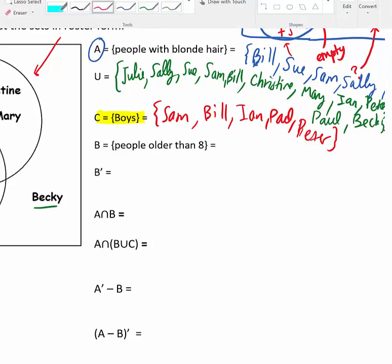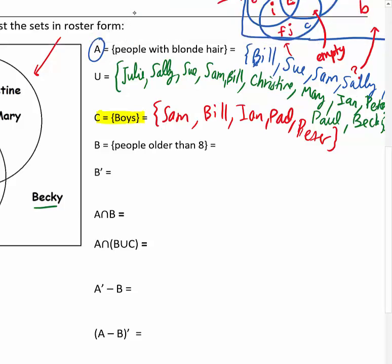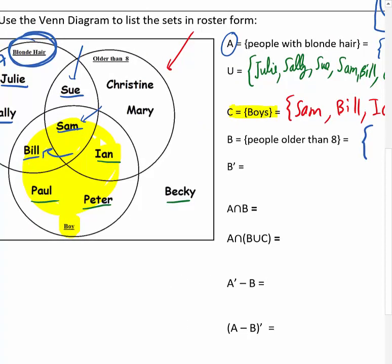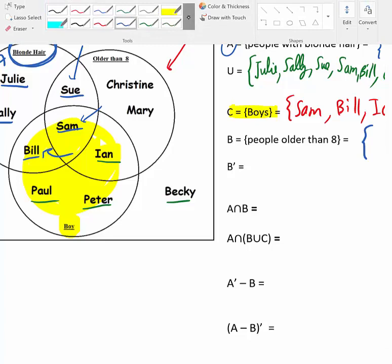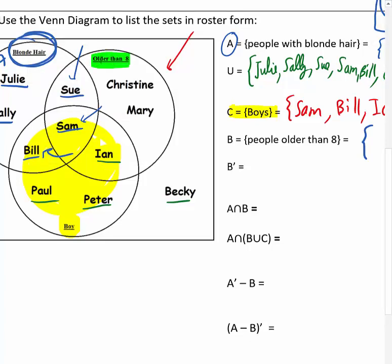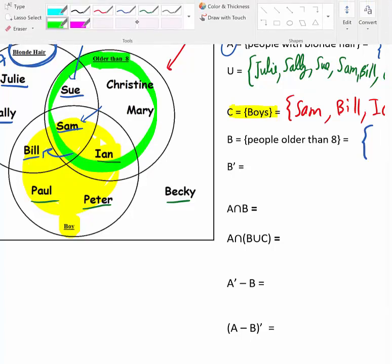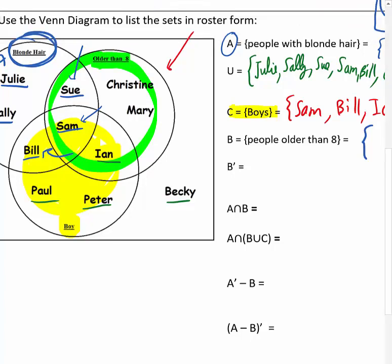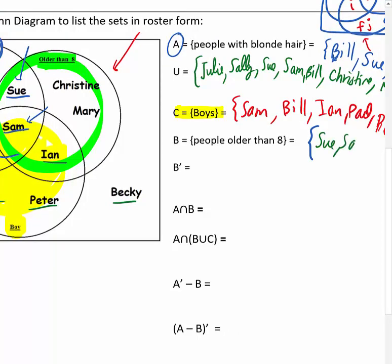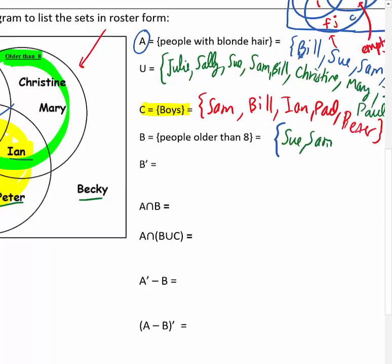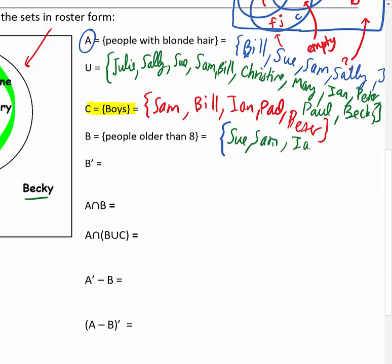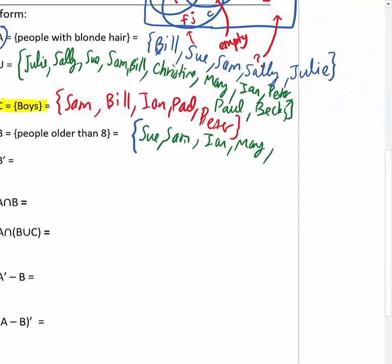Set B is the people older than eight, which are those in that circle: Sue, Sam, Ian, Mary, and Christine. Now B complement — that's all the people not in B. Everything outside the B circle: Julie, Sally, Bill, Paul, Peter, and Becky.